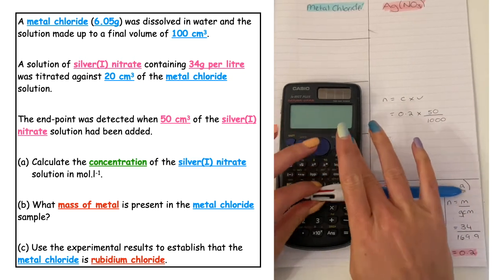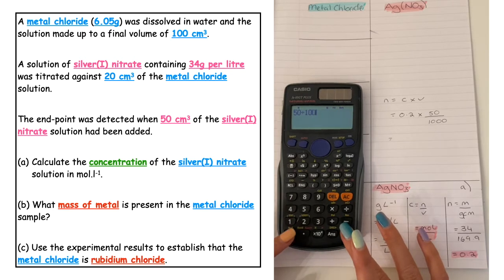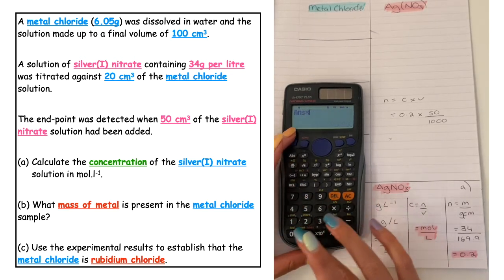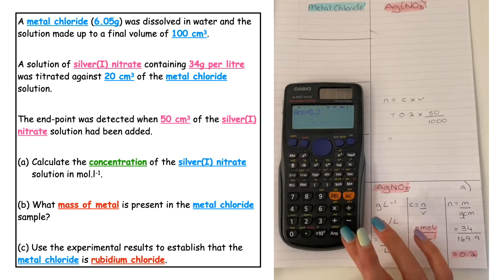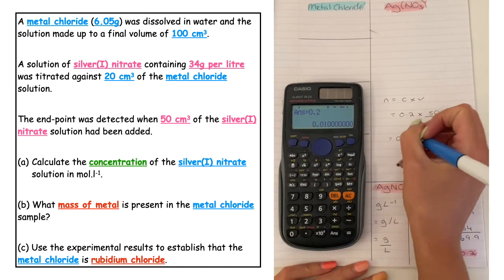So if I pop in the calculator 50 divided by a thousand to put that into litres, that gives me 0.05. Multiply that by 0.2 and the answer comes in at 0.01 moles.